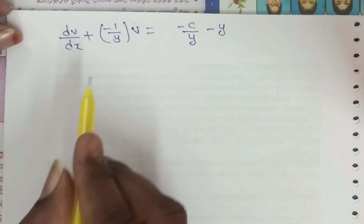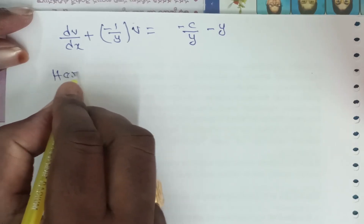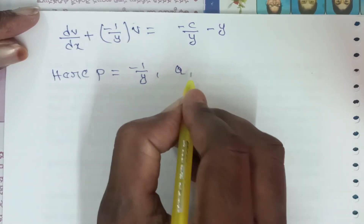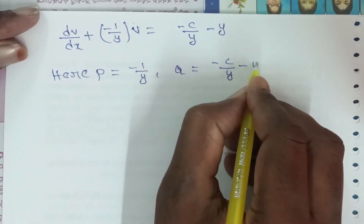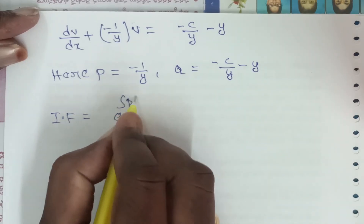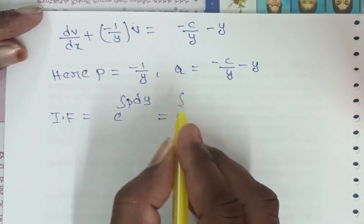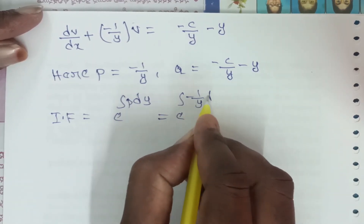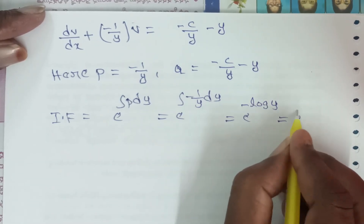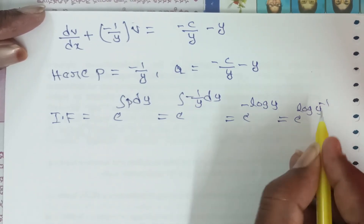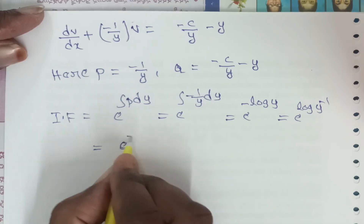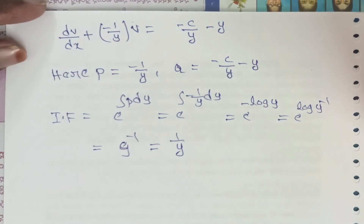For this linear differential equation of the first order: P = -1/y and Q = -c/y - y. The integrating factor IF = e^(∫P dy) = e^(∫-1/y dy) = e^(-log y) = e^(log y⁻¹) = y⁻¹ = 1/y.